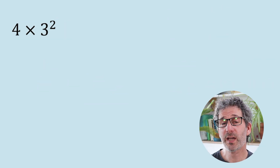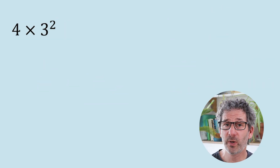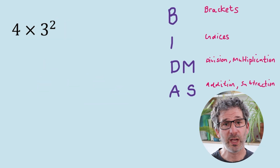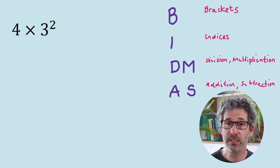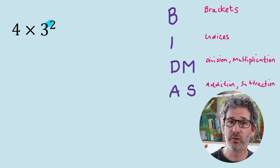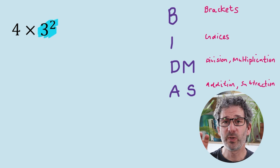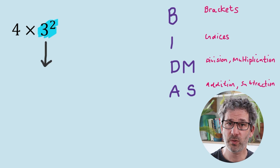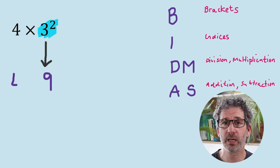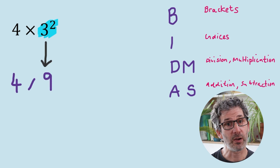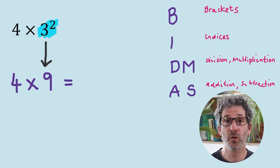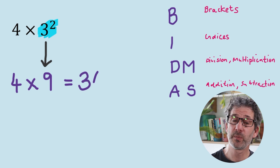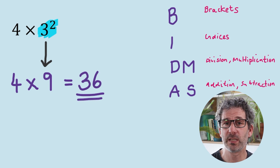Next: 4 times 3 squared. We haven't got any brackets. Indices — yes, we have. We've got that 3 squared, so we do that first. 3 squared is 3 times 3, which is 9. The calculation then becomes 4 times 9, which is 36.